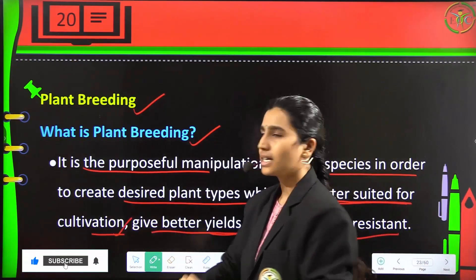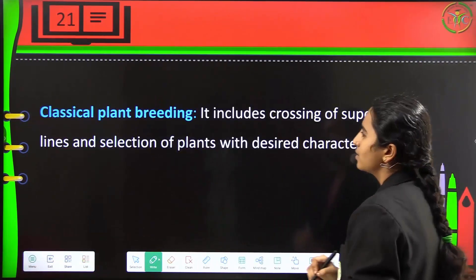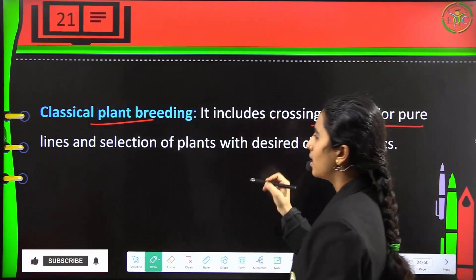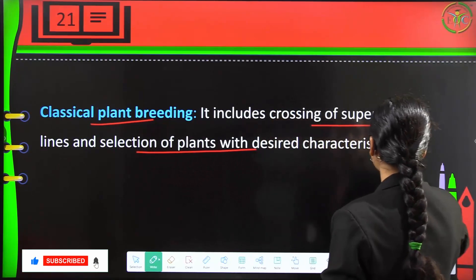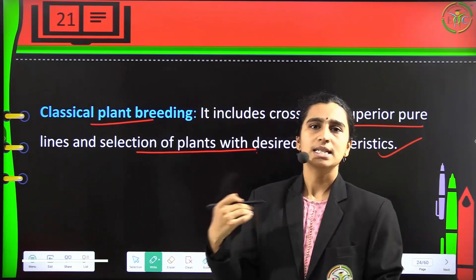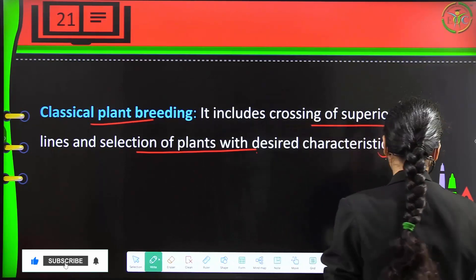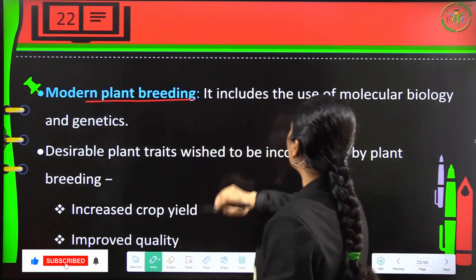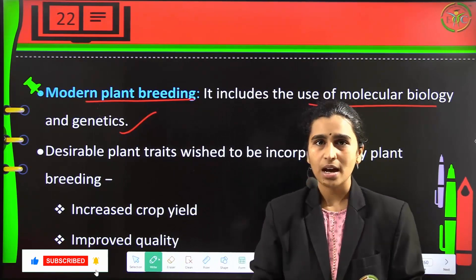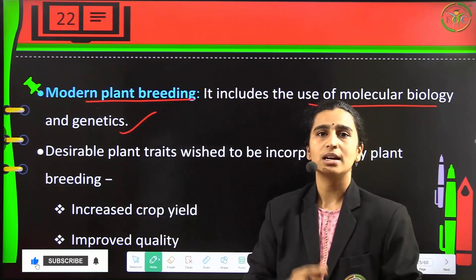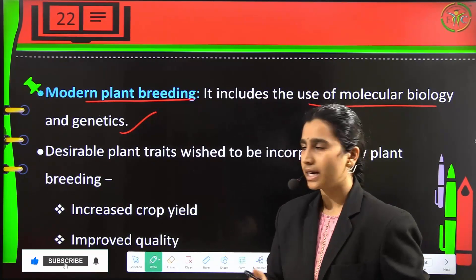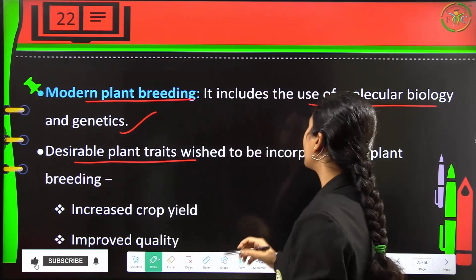Classical plant breeding includes crossing of superior pure lines and selection of plants with desired characteristics. Modern plant breeding includes the use of molecular biology and genetics — we must know the genes of the plant to be bred and their molecular structural levels and states where they can be bred easily.